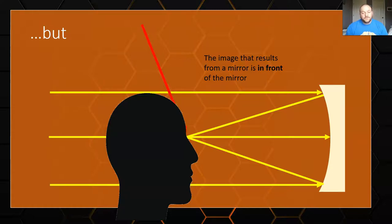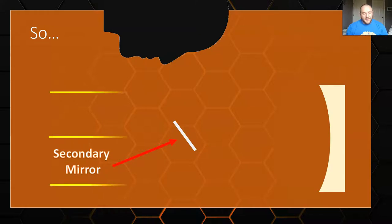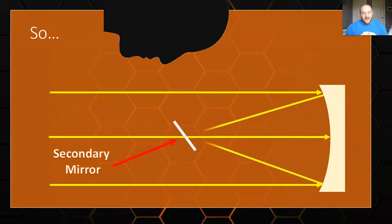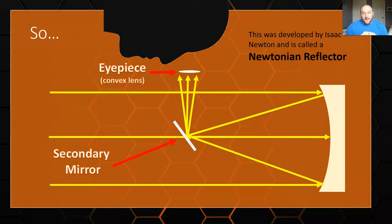One solution, developed by Isaac Newton, is what we call the Newtonian reflector. It puts a secondary mirror at about a 45-degree angle. When the light comes in, it bounces off the primary, then the secondary, and gets shot out the side. From there you can put in an eyepiece and observe your object out the side. Most commercial reflectors from companies like Meade or Celestron are Newtonian reflectors — it's a simple design and it works pretty well.